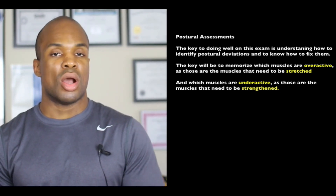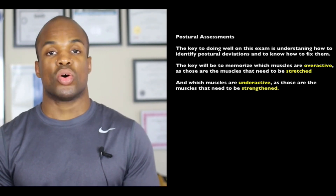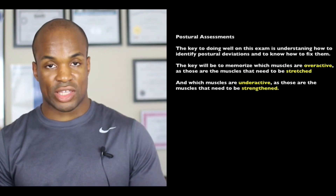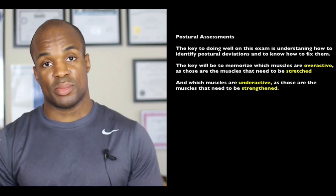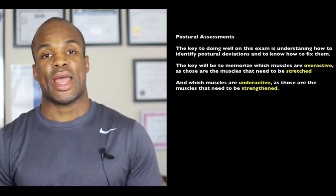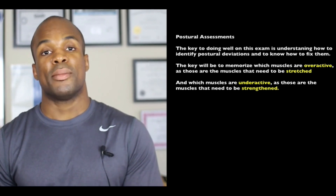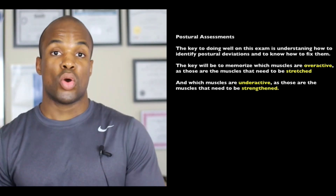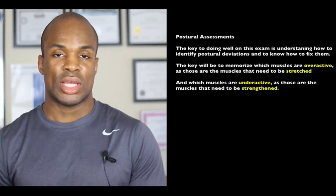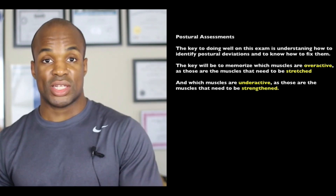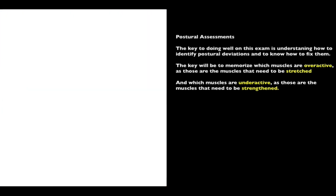For example, you may be asked: a client is exhibiting arms falling forward on an overhead squat exam — which muscles need to be stretched? They're essentially asking you what the overactive muscles are on an overhead squat with arms falling forward. The overactive muscles are going to be the latissimus dorsi, teres major, and the pectoralis major. This sounds intimidating, but there will be a fair amount of overlap across tests and deviations. I'll help you identify the patterns so you can group them together and do well on the exam.